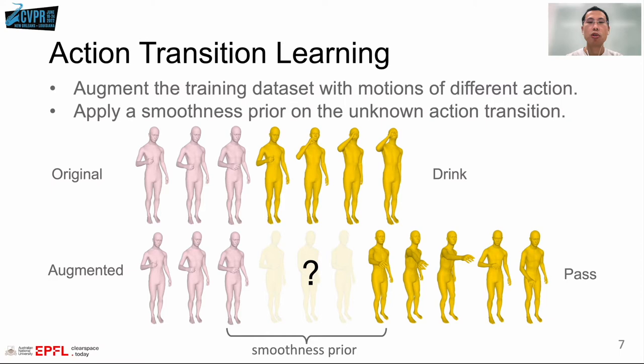Specifically, given a motion of single action like drink, we first augment it with motions from other action categories such as pass. Since the transitions between these two motions are unknown, we then encourage the transition part to be smooth during training.